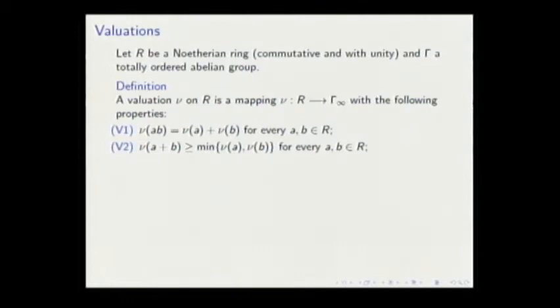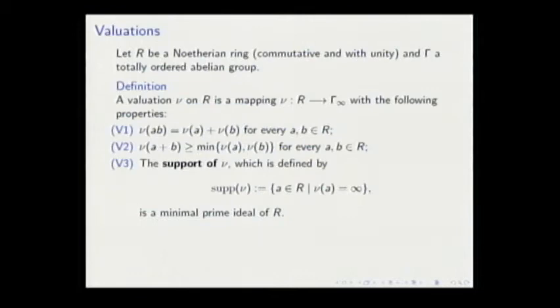The triangular inequality says that ν(a + b) ≥ min{ν(a), ν(b)} for every a and b. There is a slight difference from the usual: here we assume that the support of ν, that is all the elements taken to infinity, is a minimal prime ideal. If we are talking about a domain this would mean that ν(a) = ∞ if and only if a = 0.